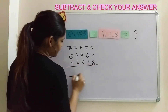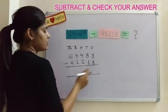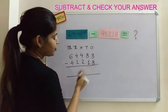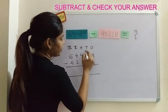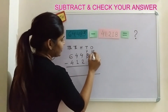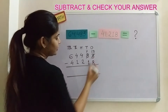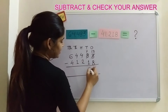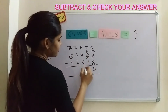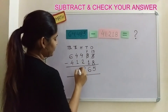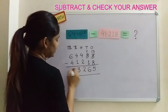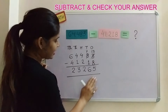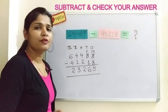Let us perform the subtraction. As you know, 3 is a smaller number — we can't subtract 8 from 3, so I'm going to borrow. It will become 7 and it will become 13. Then 13 minus 8 is 5, 7 minus 1 is 6, 4 minus 2 is 2, 4 minus 1 is 3, and 6 minus 4 is 2. So we got the answer.